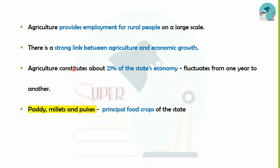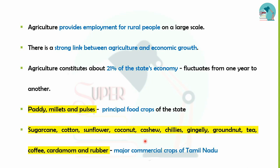When we look at Tamil Nadu, principal food crops are paddy, millets, and pulses. Commercial crops include sugarcane, cotton, sunflower, coconut, cashews, chillies, gingelly, groundnut, tea, coffee, cardamom, and rubber. These are the major commercial crops grown in Tamil Nadu.